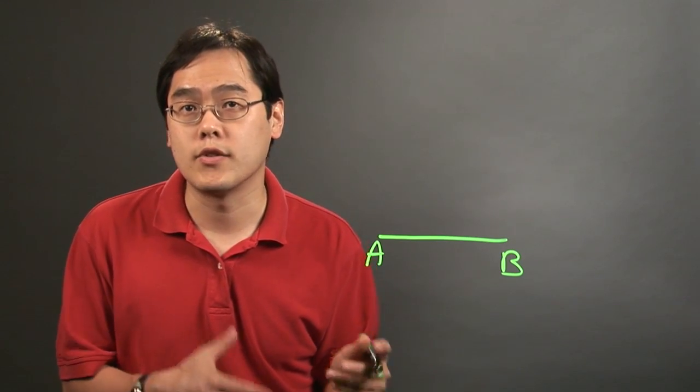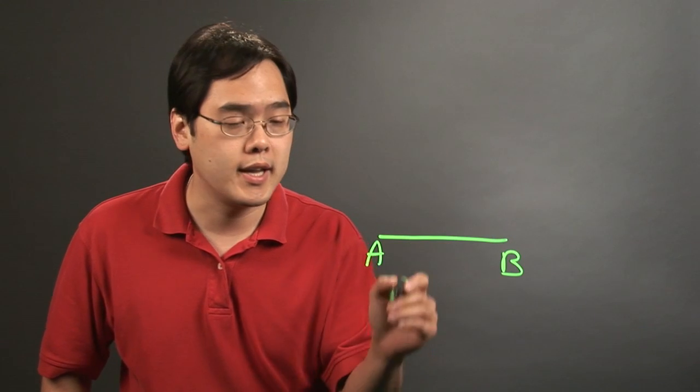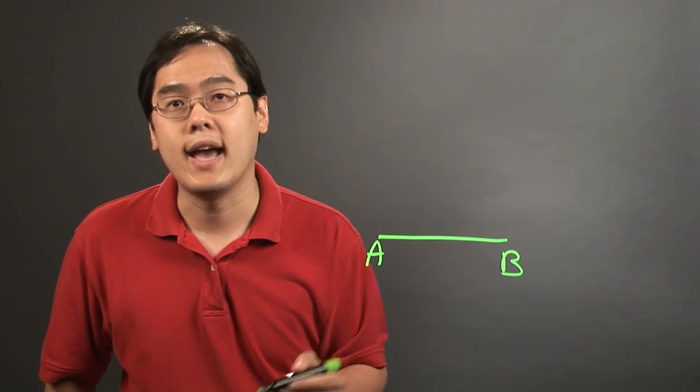Now what you want to do from here is use the protractor with the baseline on this line and with point A as the center.